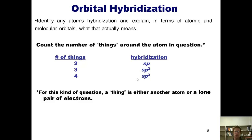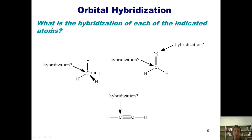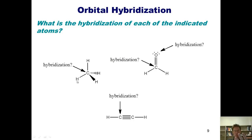Let's look at some examples: what is the hybridization of each of the indicated atoms? See this carbon? We're going to count how many things are around it — by things, I mean atoms or lone pairs. This carbon has a hydrogen, a hydrogen, a hydrogen, a hydrogen. I count four. There are four hydrogens. So what's its hybridization? It's SP3.